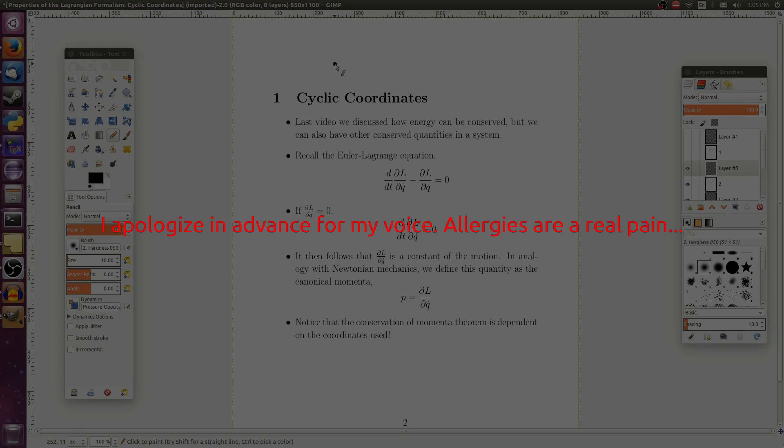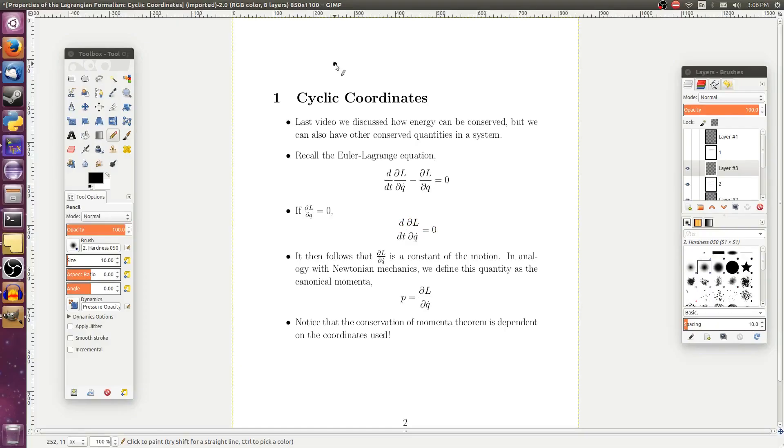Alright, so today we're going to talk about cyclic coordinates and applications to the Kepler problem. Last video we talked about how energy could be conserved, but we could also have other quantities being conserved in a system, mainly momenta. We'll discover in this video what exactly is conserved and the conditions that have to be met.